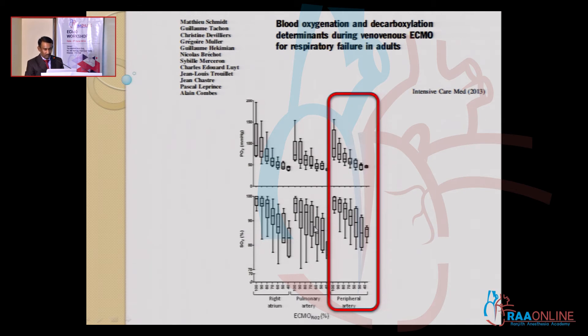Both in the pulmonary artery and right atrium it will also increase, but what we have highlighted is that at the peripheral level both the saturation and the PO2 increase. So the second parameter that can increase oxygen delivery is FiO2.